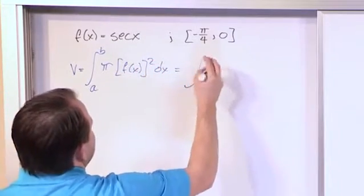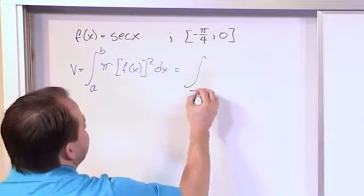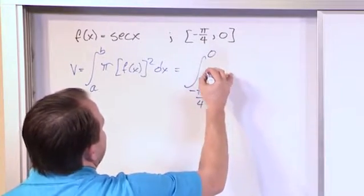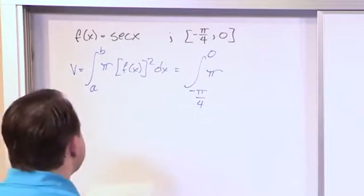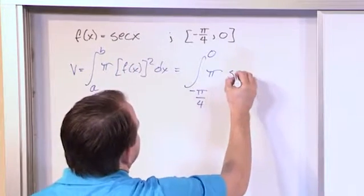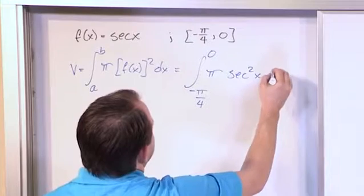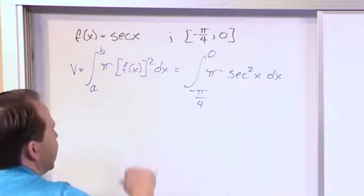And so for this case, it's integrating from pi over 4 up to 0, pi, and then f of x squared, since f of x is just secant, what we have is secant squared of x dx, because we're just squaring the secant and so that's what we get.